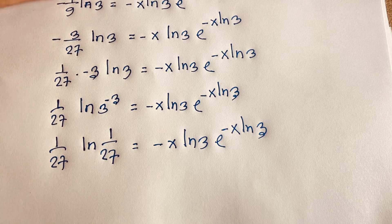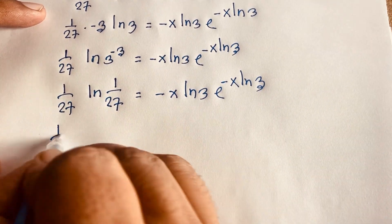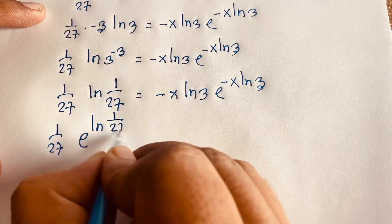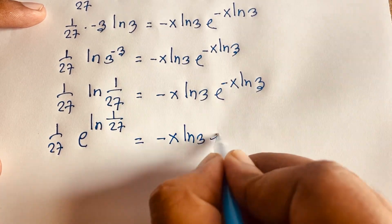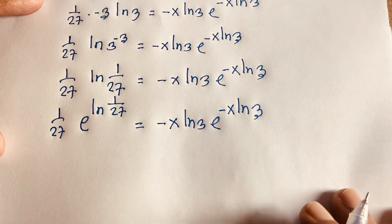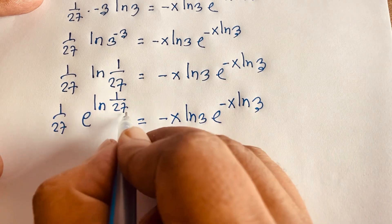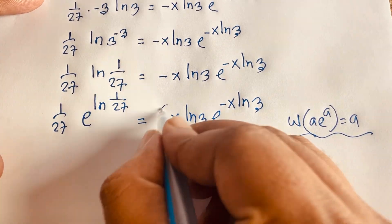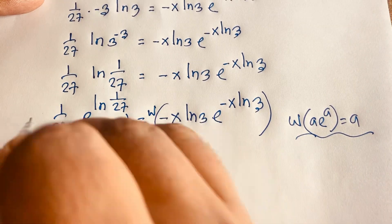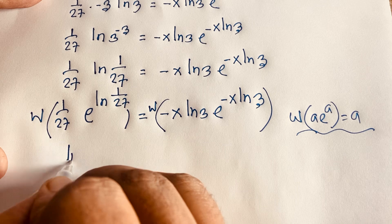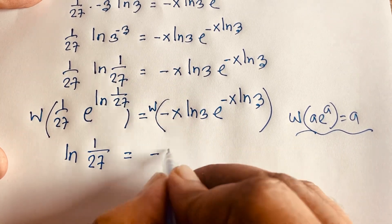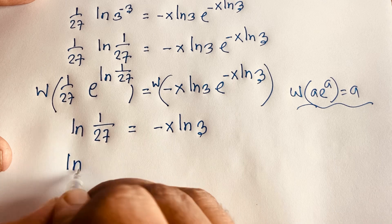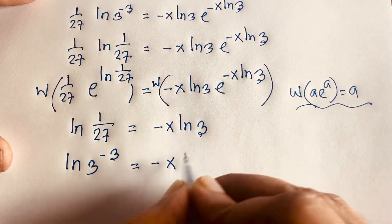Using the identity e to the power ln a equals a, I rewrite the left side as e to the power ln of 1 over 27, so the equation is e to the power ln 1 over 27 equals minus x ln 3 times e to the power minus x ln 3. Now applying the Lambert W function to both sides — since W(a·e^a) = a — I get ln of 1 over 27 equals minus x ln 3.